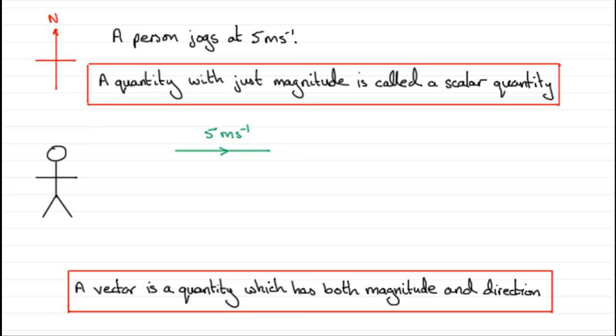If our jogger was to jog in a northerly direction, say, at 2.5 meters per second, then I would need to draw an arrow pointing in the northerly direction, and its length would be representative of the 2.5 meters per second. In this case, this length would be half the length of the 5 meters per second.